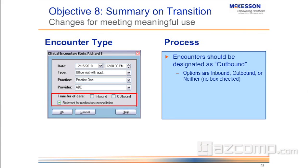You can see the clinical encounter screen is the same one that we use for medication reconciliation — you get to use it for the summary of transition as well. Basically, what you're going to do is instead of inbound, you're going to check outbound, and that'll be outbound of your system. An encounter should be designated as outbound; the options inbound, outbound, or neither are available, and neither is just if you don't check any of the boxes.